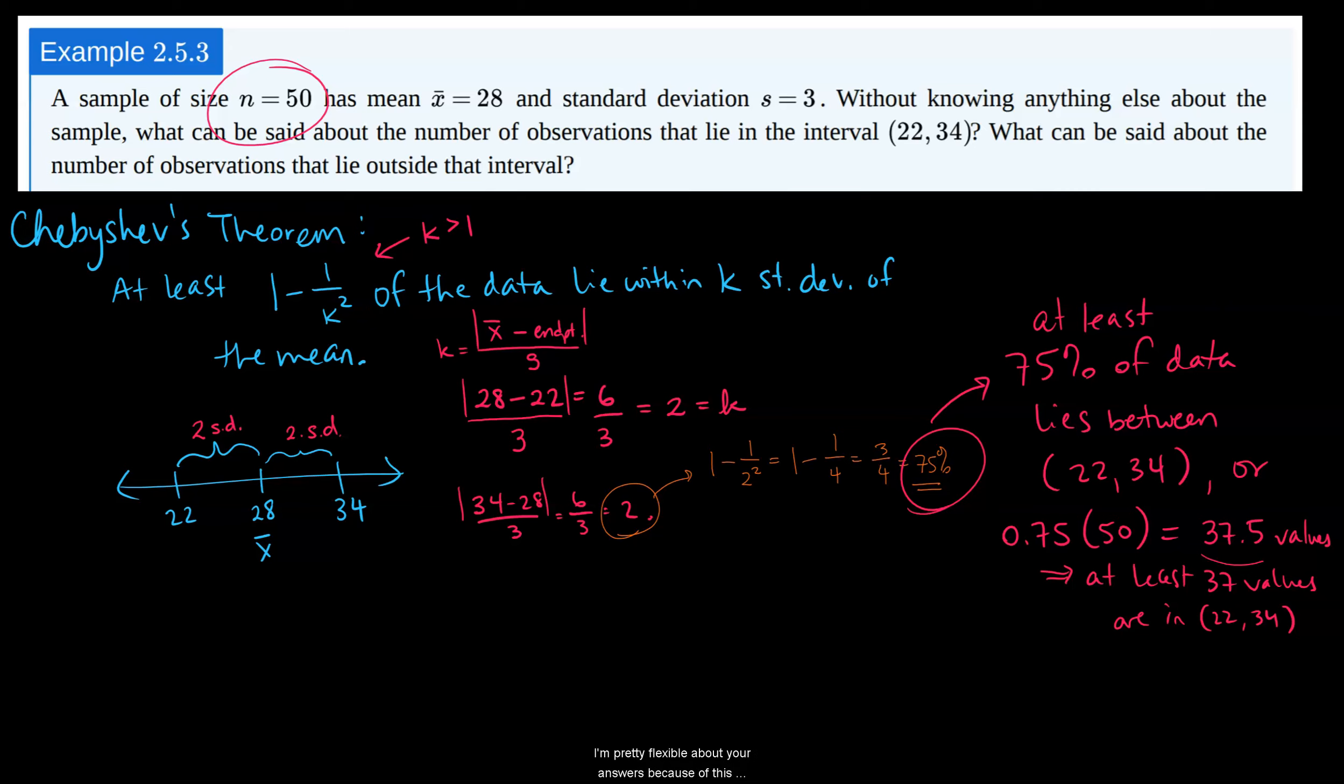I'm pretty flexible about your answers. Because of this ambiguity, I understand how frustrating it can be. Different rules for different things. Even calculating the median two different ways is a little frustrating. But both of them are technically correct.